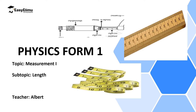Hello students, welcome to EasyLimu — Learning Simplified — and welcome to this lesson. In the previous lesson we discussed measurements. We said measurement is the process of finding the size of physical quantities. We also discussed the two main types of physical quantities: basic quantities and derived quantities. Among the seven basic quantities, we discussed length as an example.